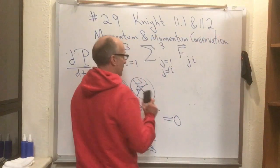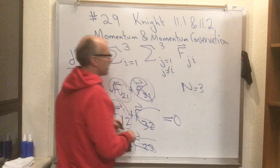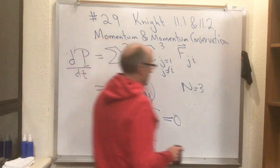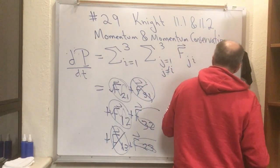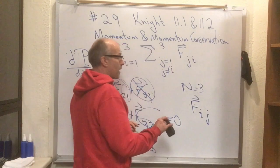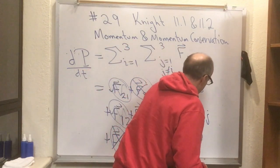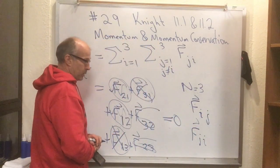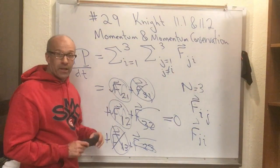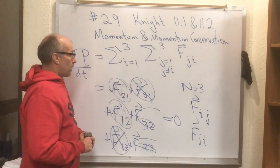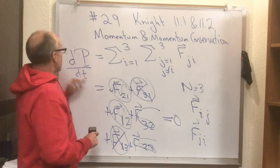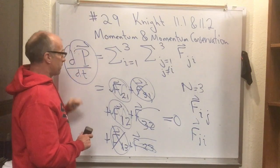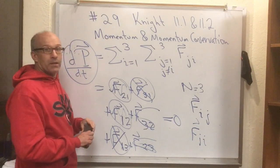Now, that was nice. I did it for capital N equals 3. But, of course, this works for N equals 53 or 103 or 1,003. Because every time F_ij appears in the sum, somewhere else F_ji appears in the sum. And F_ij and F_ji are equal and opposite. So, there's always a pairwise cancellation in the sum. And so, what we've learned is that dP/dt, the derivative of the total momentum of the system with respect to time, is equal to 0.